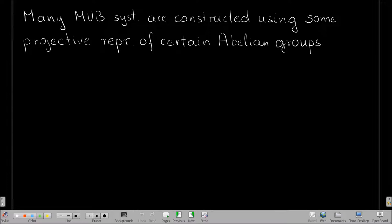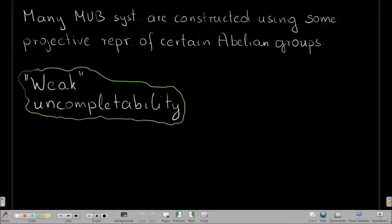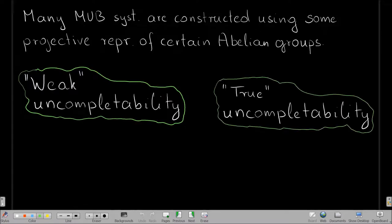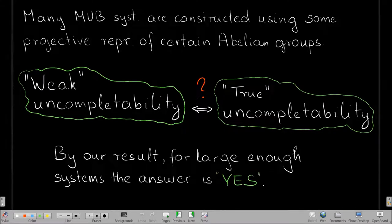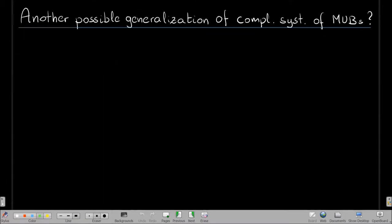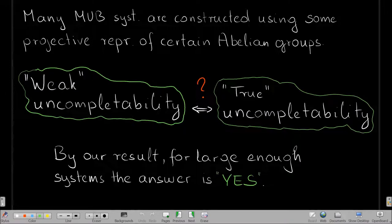Many MUB systems are constructed using projective representations of abelian groups, and one builds them larger and larger until getting stuck, then wonders whether completion is possible without using that specific projective representation. By our rigidity result, if the system is large enough, the answer is actually yes — it cannot be completed by any means. This allows us to exhibit large MUB systems that provably cannot be completed to a complete system.